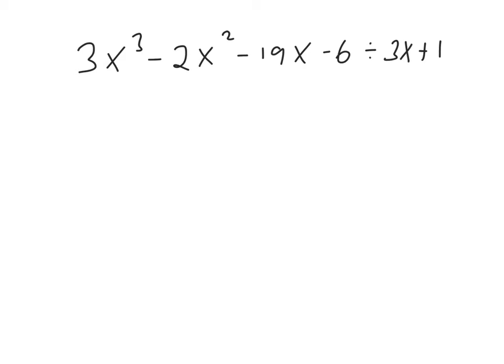The first thing we need to do is determine what the size of our grid is going to be. That depends on the highest power of x here in this expression. The highest power of x is 3, which means we need to have 3 columns in our grid. And because there's 2 terms in the divisor, we need to have 2 rows.